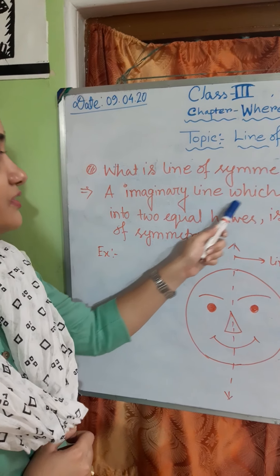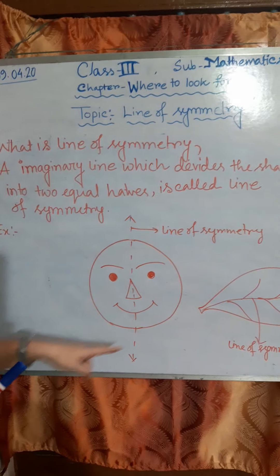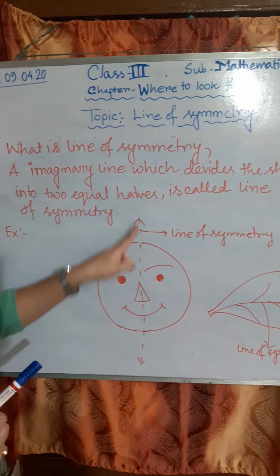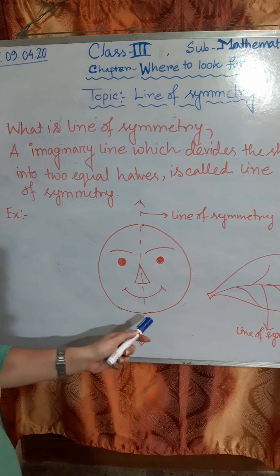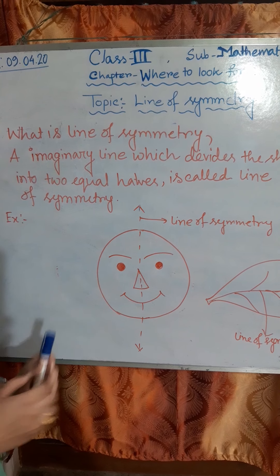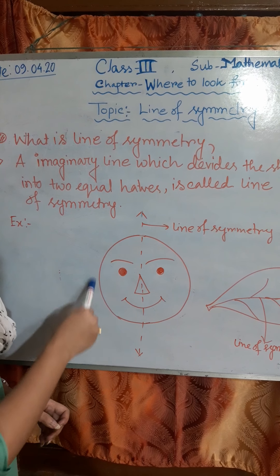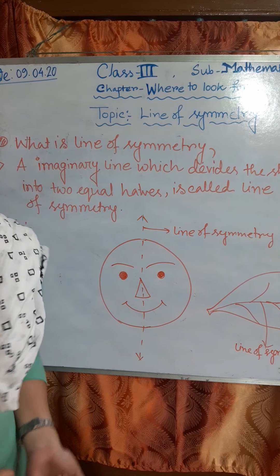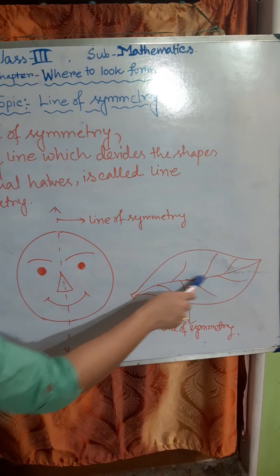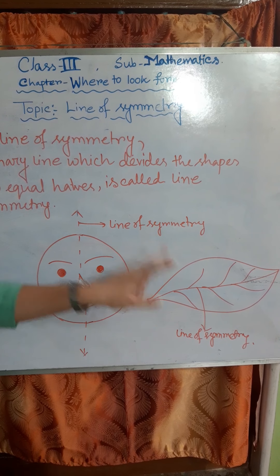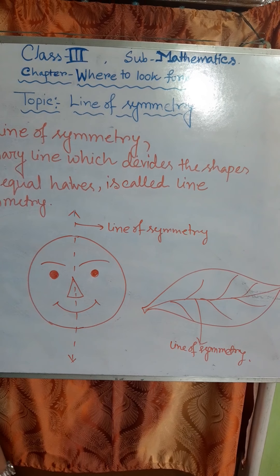An imaginary line which divides shapes into two equal halves is called a line of symmetry. Here I have drawn one smiley and I have drawn a line, and this line divides the smiley into two equal halves. This part is identical with this part. Also, here is a leaf, and its mid-rib divides the leaf into two equal halves, so it is also a line of symmetry.